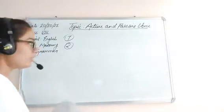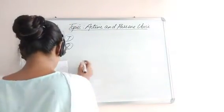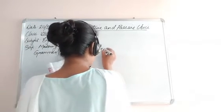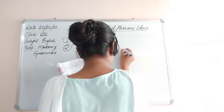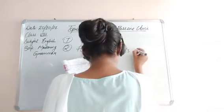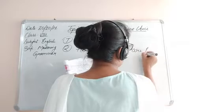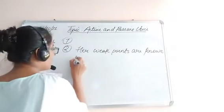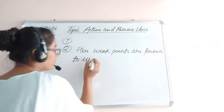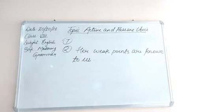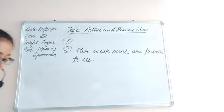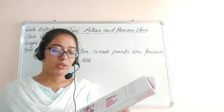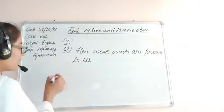Next sentence: 'We know her weak points.' The passive voice would be: 'Her weak points are known to us.' Another sentence: 'Few sheets were given to us.' The passive voice for the third sentence would be: 'We were given few sheets by them.'